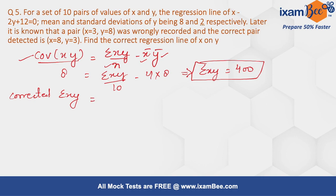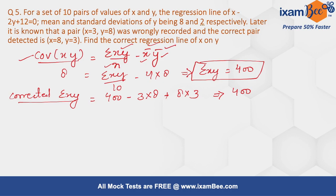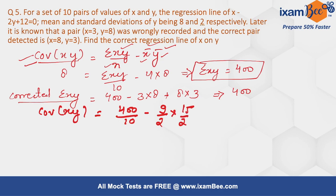Now with corrected summation xy of 400, corrected x̄ of 9/2, and corrected ȳ of 15/2, we can find the corrected covariance of xy. It becomes 400 divided by 10 minus (9/2) times (15/2), which gives 25/4. We also need the corrected standard deviation of y, which requires finding the corrected summation y squared.